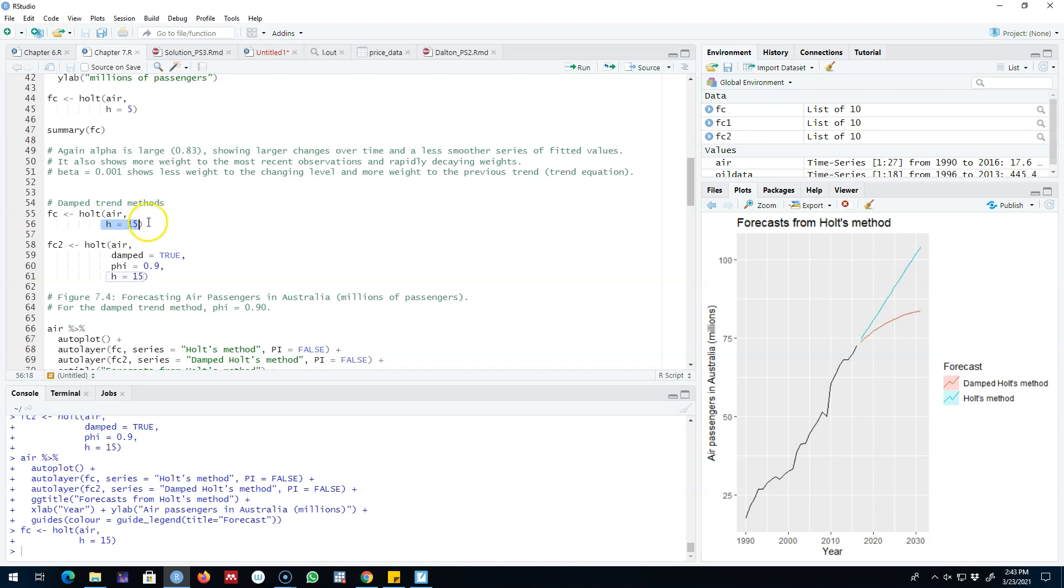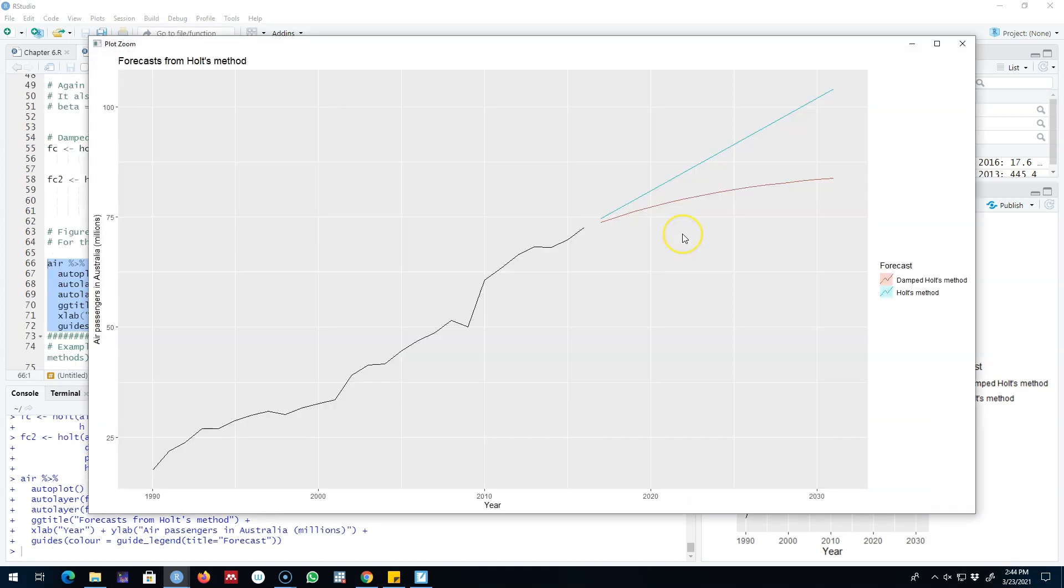So this will be our regular forecast, and then we can also introduce damped method here by turning on this switch damped equals true. And then we can introduce phi equals 0.9 to tell that the value of phi that I described earlier is 0.9. This is how much we want to damp our trend.